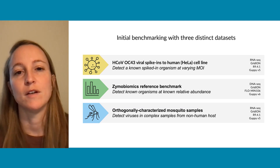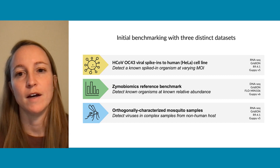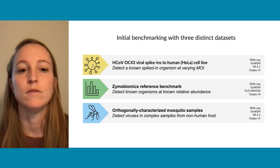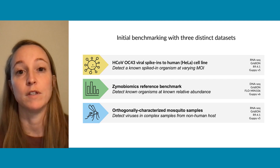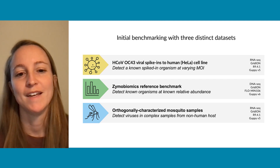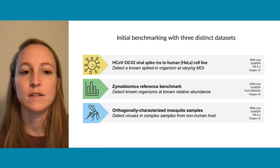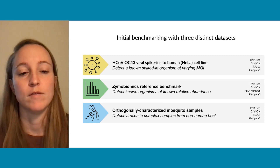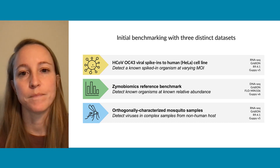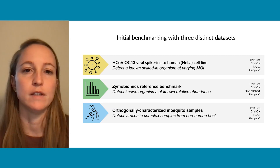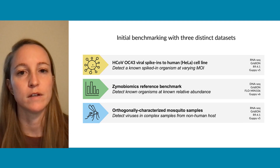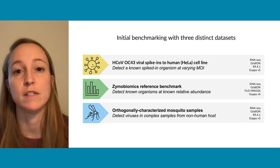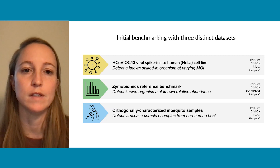We were then interested in understanding whether we could detect differing relative abundances, and we used the Zymo Biome reference benchmark — a previously published data set with known organisms at known relative abundances. This is DNA-seq data processed on a GridION using an older flow cell, but rebase called recently with Guppy v6.